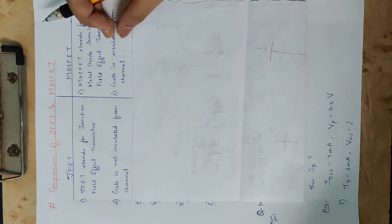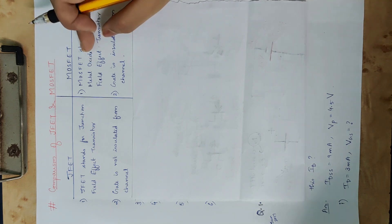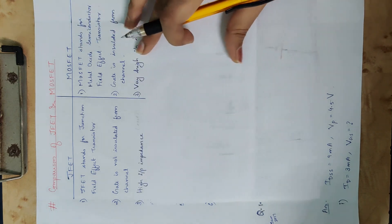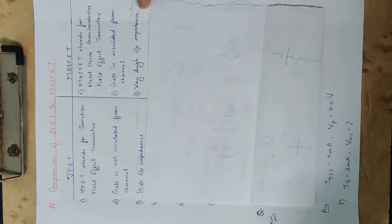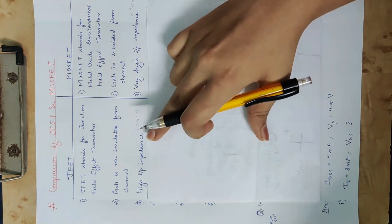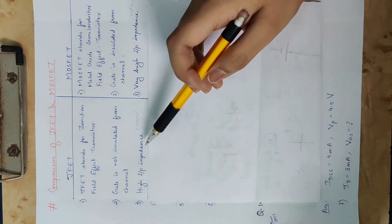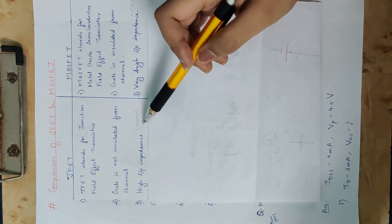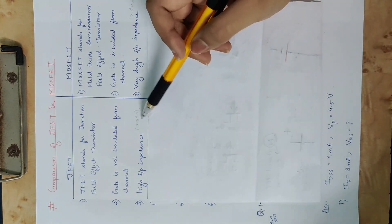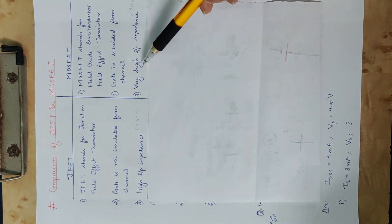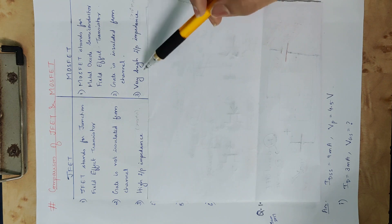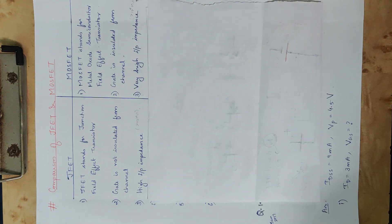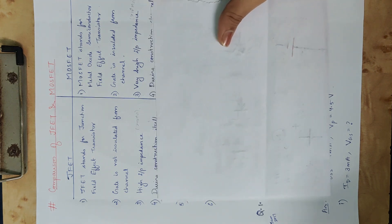In MOSFET, we have a metal oxide layer providing insulation. Regarding input impedance: JFET has high input impedance, greater than 10 megaohms. But in MOSFET, it is greater than 10 raised to the power 4 megaohms — significantly higher.